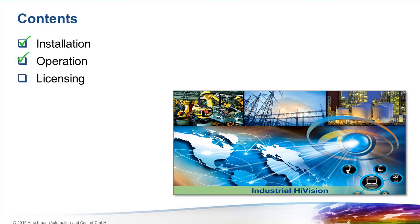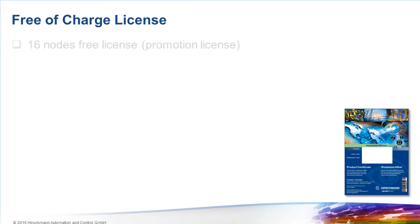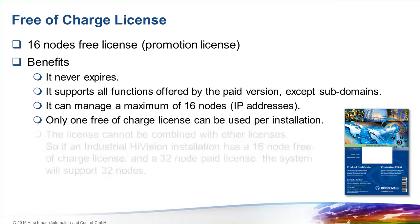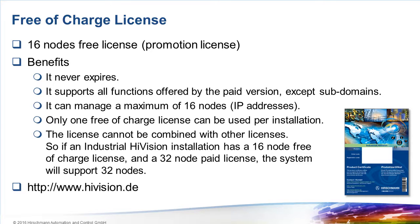That's the end of the network operation section. As previously described, there are only two major new functions, but both will greatly reduce the workload of the network administrator. Version 7 of Industrial HiVision includes a promotion license, intended to allow potential customers to evaluate the functionality over a longer period of time. This license is provided free of charge. Very importantly, this license has no time limit — it will never expire.